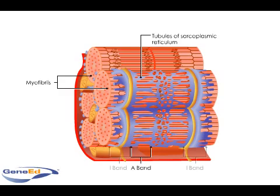Where the A and I-bands intersect, the sarcoplasmic reticulum forms a perpendicular long axis, called the terminal cisternae. The sarcoplasmic reticulum stores the muscle's calcium and releases it during stimulation.